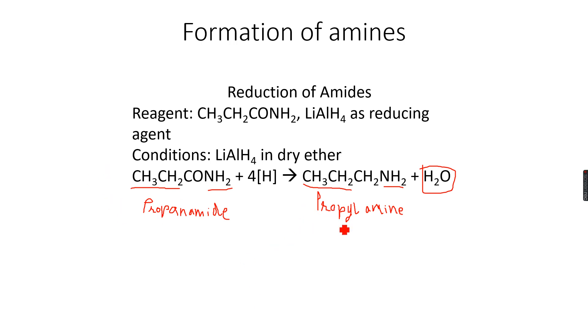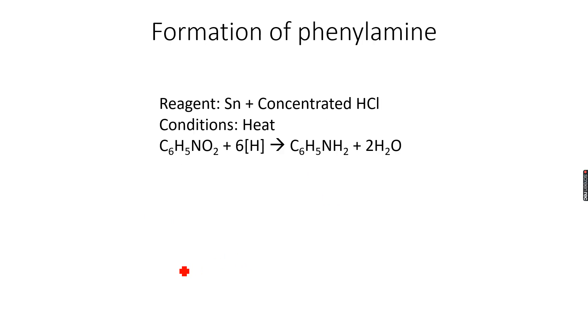Now, how do we form phenylamine? We have talked about three ways in which aliphatic amines can form. Now let's talk about how aromatic amines are formed. I have written that tin - solid tin - plus concentrated HCl are used as the reagents. The 'concentrated' is very important, so do not forget to write that in your answers. The condition is heat, so we heat the reaction.